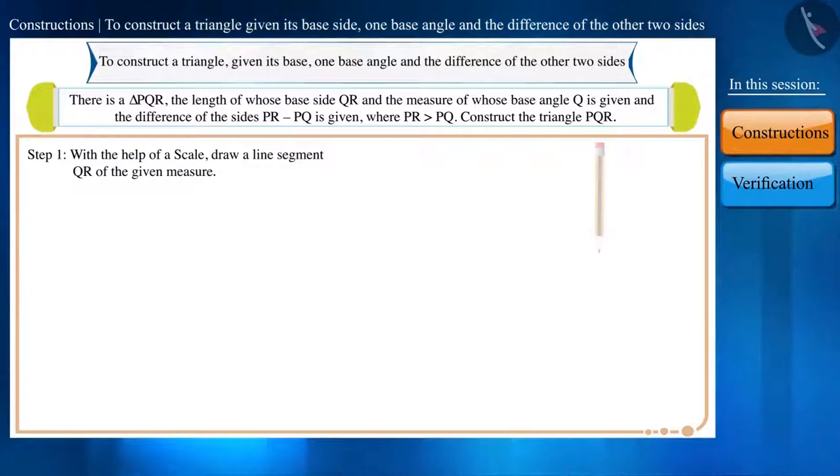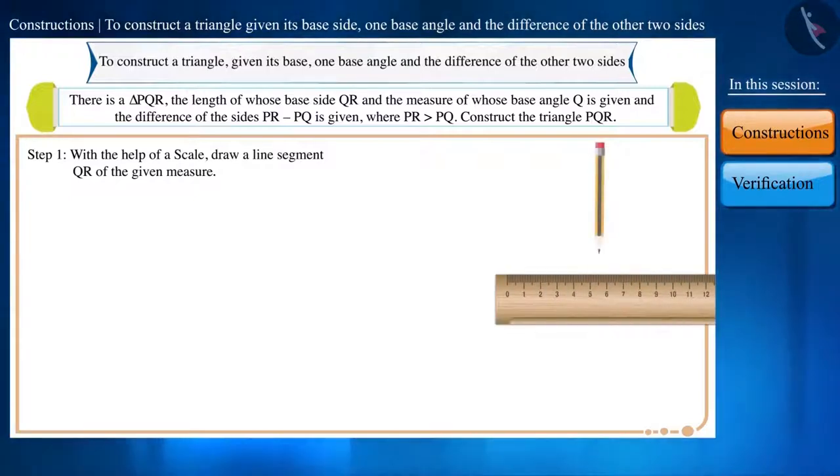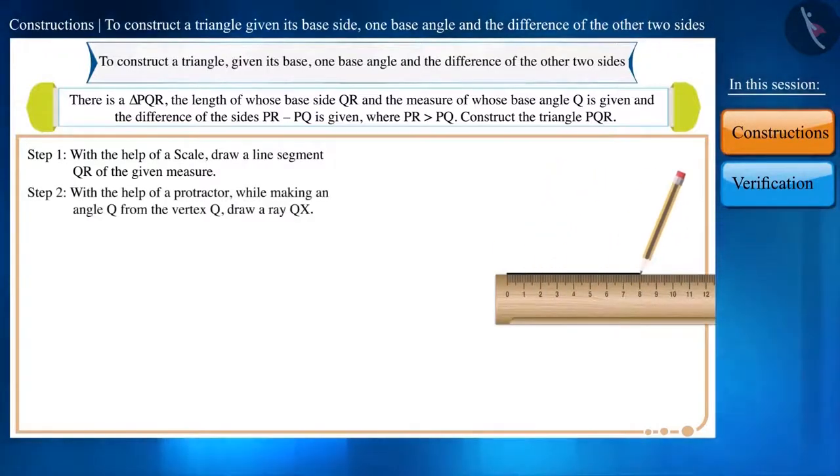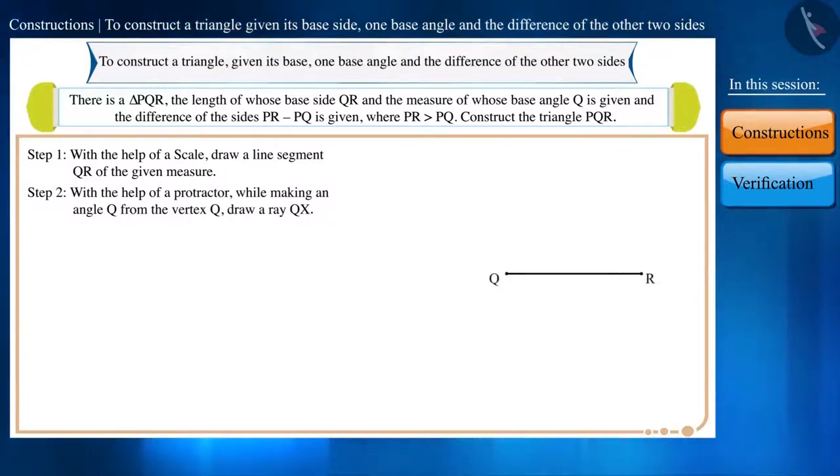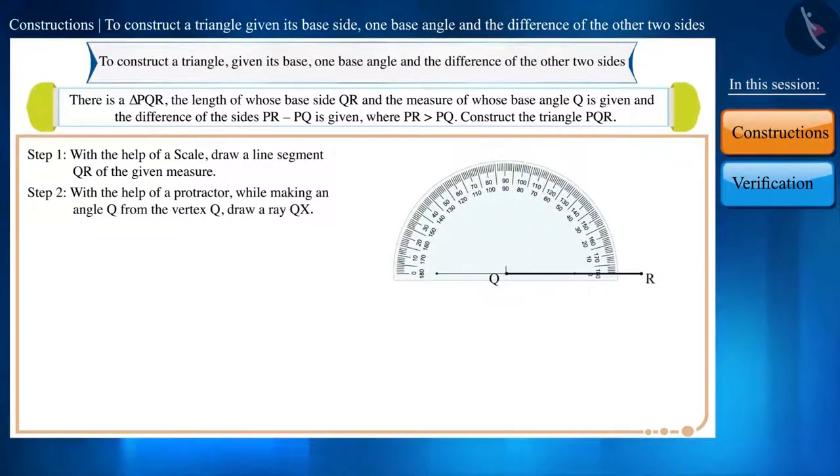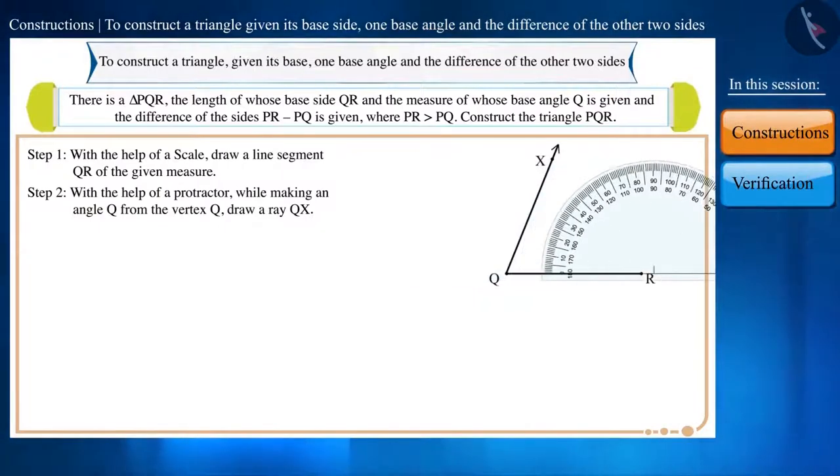Step 1. First of all, with the help of a scale, draw a line segment QR of the given measure. Step 2. With the help of a protractor, by making an angle Q from the vertex Q, draw a ray QX.